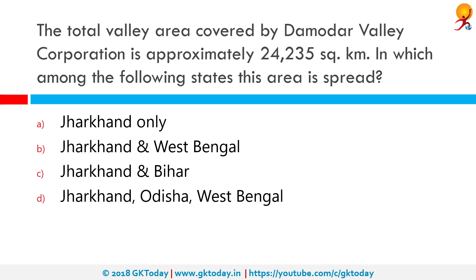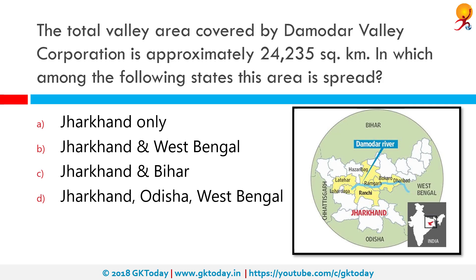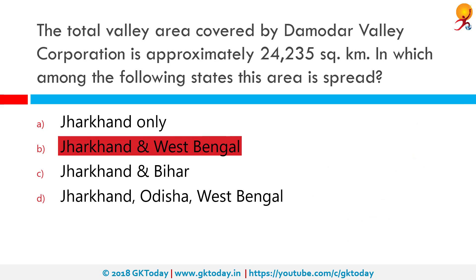The total valley area covered by Damodar Valley Corporation is approximately 24,235 square kilometers. In which among the following states is this area spread? As visible on the map, Damodar Valley Corporation is spread along the Damodar River, which spans across the states of West Bengal and Jharkhand. So the correct answer is option B: Jharkhand and West Bengal.